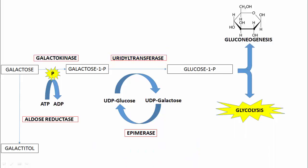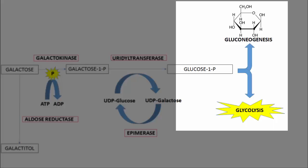Once galactose has been converted to glucose-1-phosphate, it plays a role in two key biochemical processes. It can continue to be converted to glucose for gluconeogenesis, or it can be metabolized further through glycolysis, which produces energy for the cell.